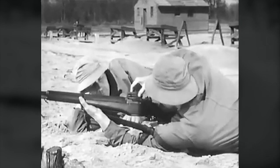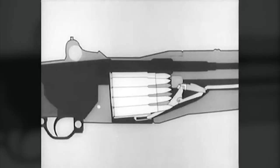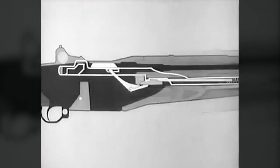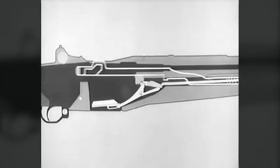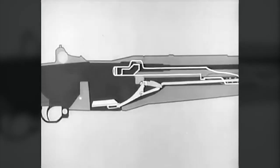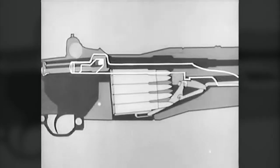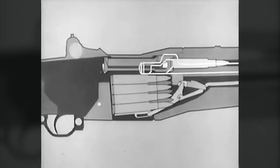Now let's go back and review a few points. A loaded clip is inserted. The follower arm and accelerator rotate, camming the catch down and releasing the operating rod which starts forward. The rod and bolt move forward. A cartridge is stripped and guided into the chamber.